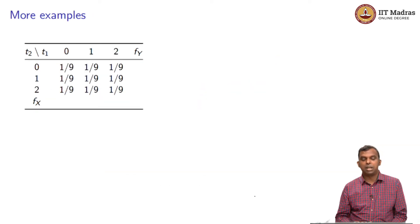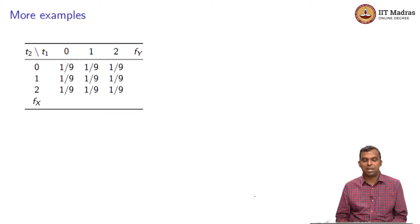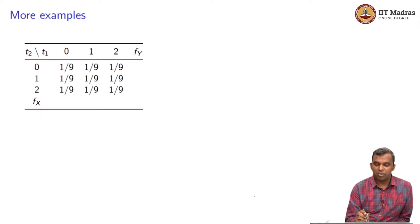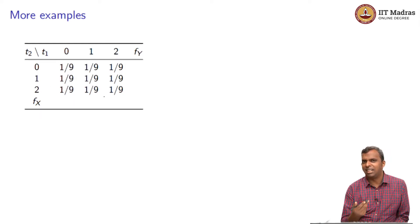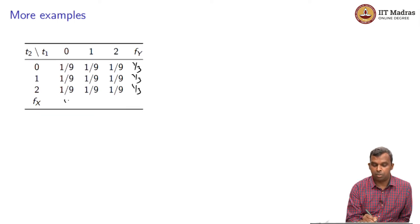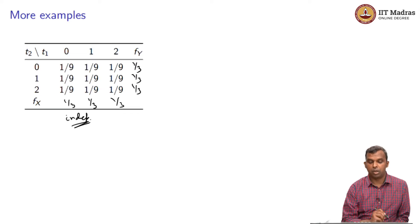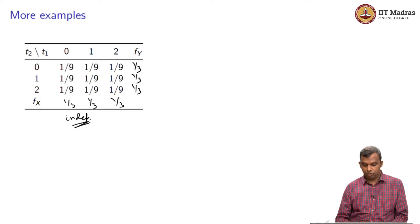Let us make it a slightly bigger problem. Here is a 3×3 joint PMF with all entries equal to 1/9. Whenever you have a grid with all equal values, it is tempting to say it is independent — and indeed you can check that each marginal is 1/3, and all products give 1/9. So this case is also independent.